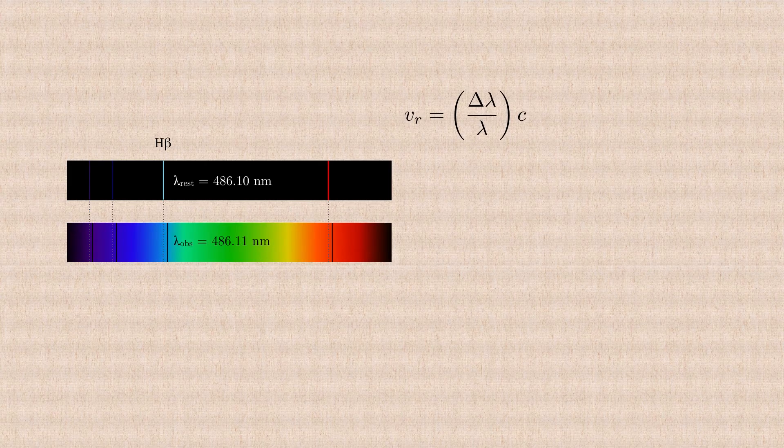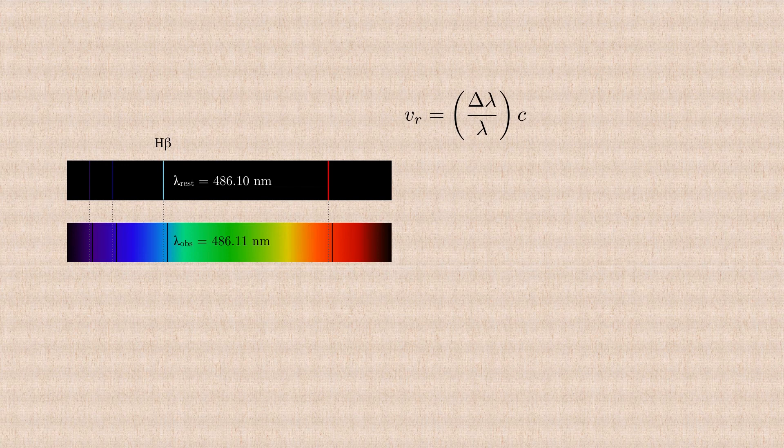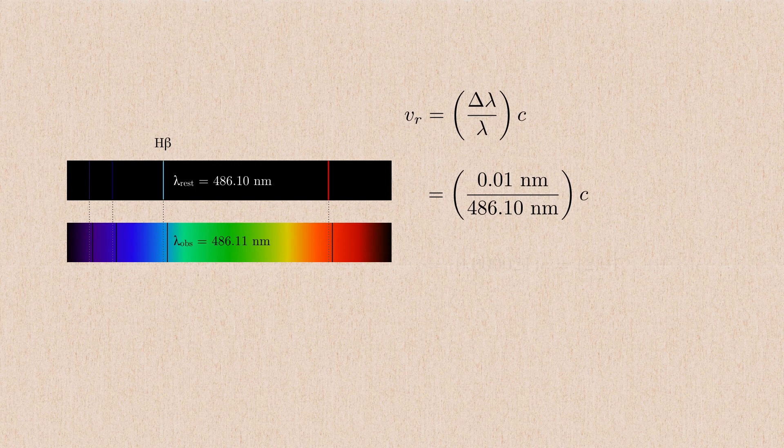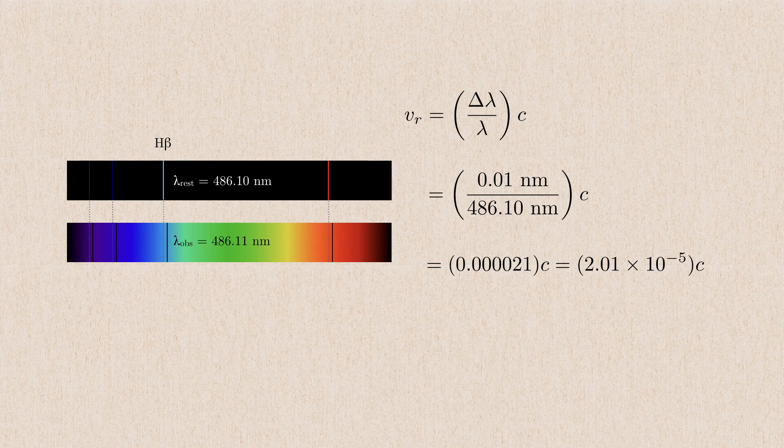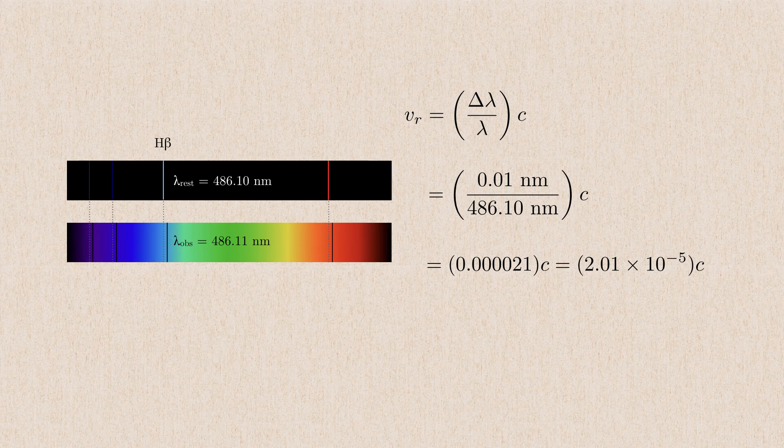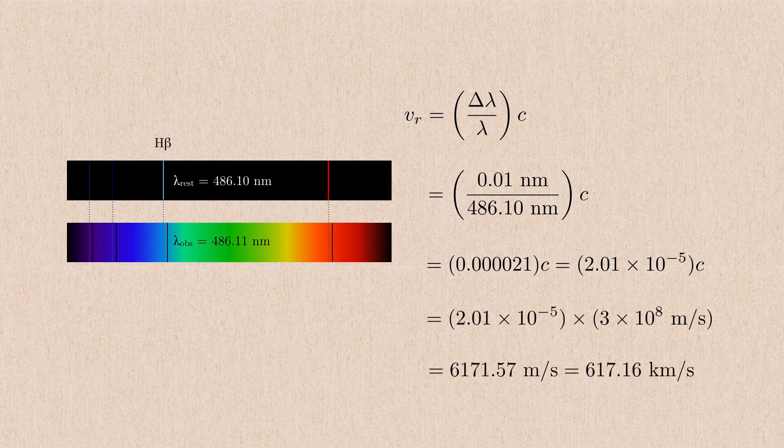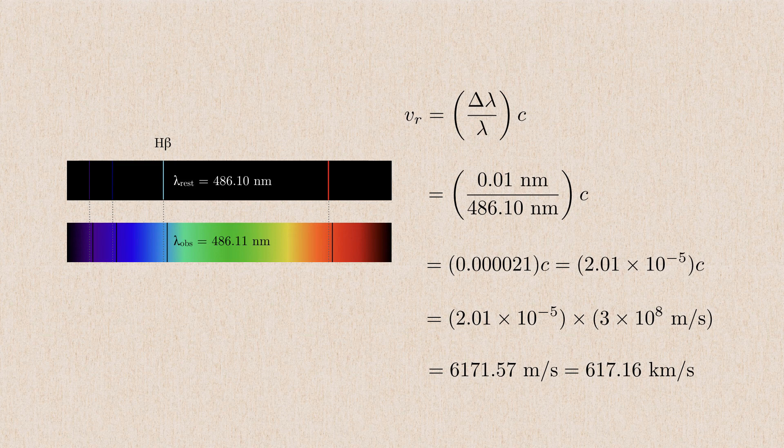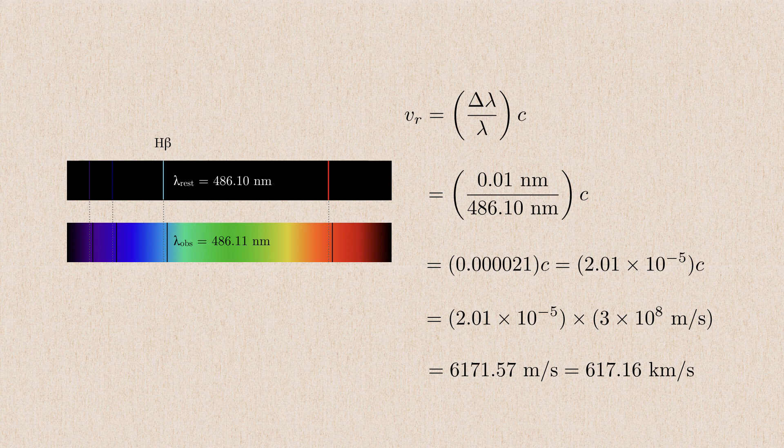We're looking at the spectrum of a star, and its observed wavelength of the hydrogen beta line is at 486.11 nanometers. That's just one one-hundredth of a nanometer different from its rest wavelength. So what kind of a radial velocity does this tiny change result in? Well, let's calculate it out. So we can cancel out the nanometers, and we find that we have 2.01 times 10 to the minus fifth multiplied by the speed of light. Well, the speed of light is 3 times 10 to the eighth meters per second, so if we multiply that out, we find that this star is moving away from us at a velocity of 6,171 meters per second, or basically 617.2 kilometers per second. That is pretty fast, even though that's just a very tiny change in the Doppler shift of the star. So a tiny blue shift or a red shift can mean an enormous radial velocity.